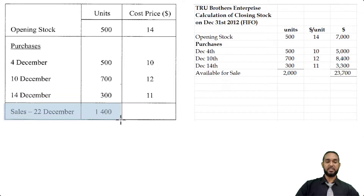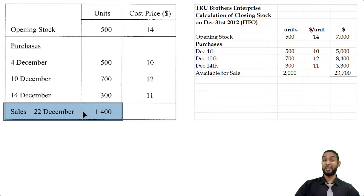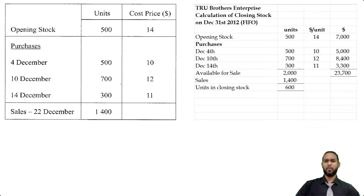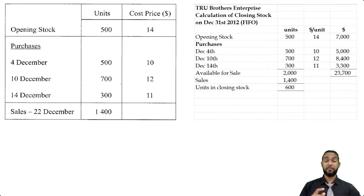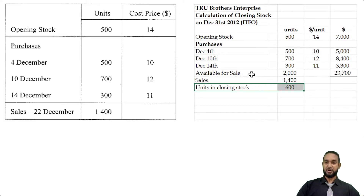We had a sale on the 22nd of December of 1,400 units. The selling price is irrelevant because we're not calculating profit or revenue — we simply want to know the value of ending inventory and how many units are left. If we sell 1,400 units, we are going to have 600 units left. The value depends on which batches those 600 units are coming from, and we know it's FIFO — first in, first out. We had 2,000 units available, sold 1,400, leaving 600 units.